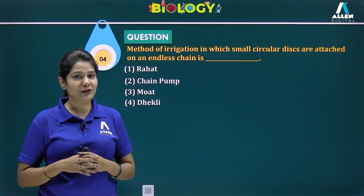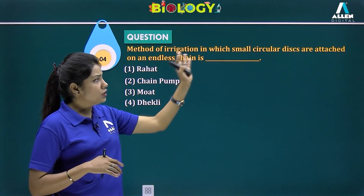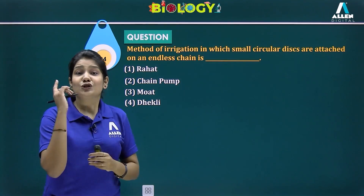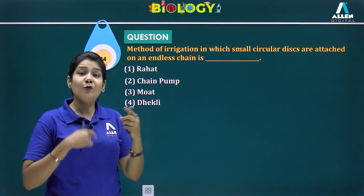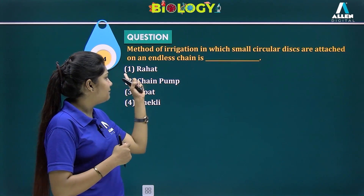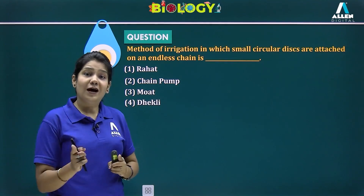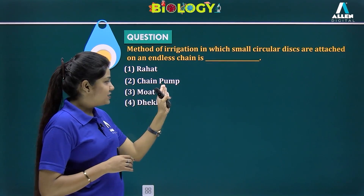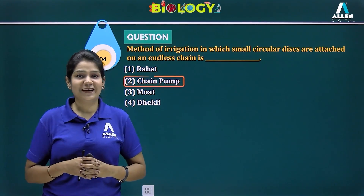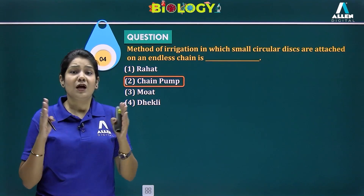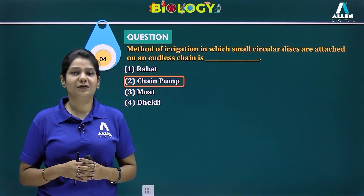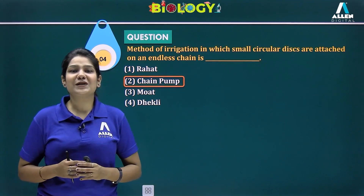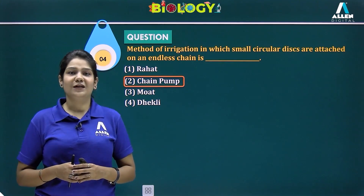The last question: which method of irrigation has small circular discs attached on an endless chain? Rahat is the lever system relying on livestock, so that is incorrect. The correct answer is chain pump. This concludes the lecture — please go through the content and the app material provided to you as well. Thank you.